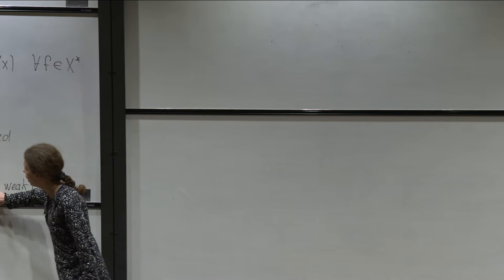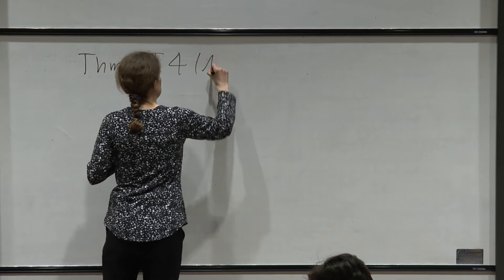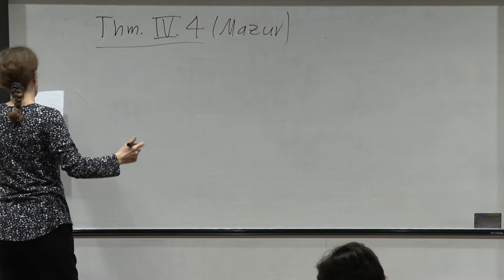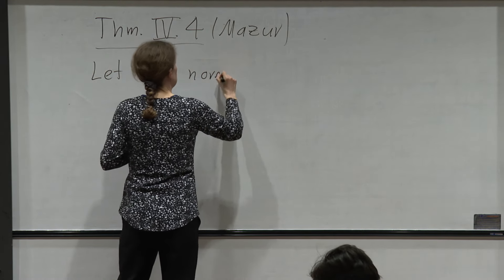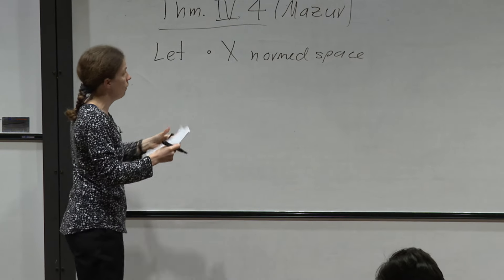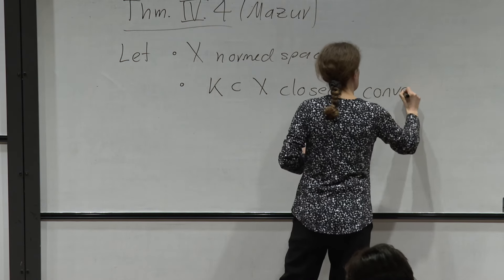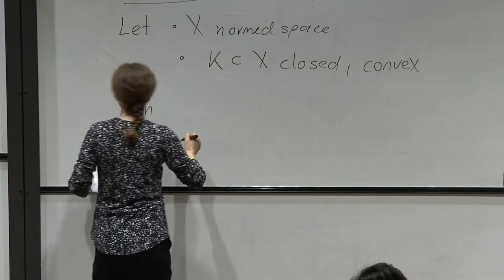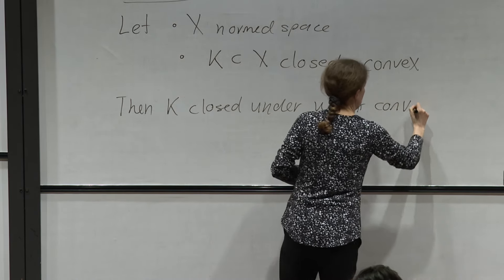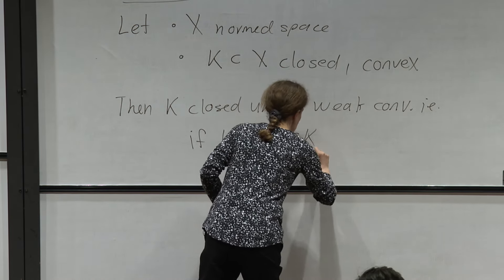Let's get started with the generalization, which is Mazur's theorem. Theorem 4.4: if we have a set that is convex and closed (in the standard norm sense) in a normed space X, then it is closed under weak convergence. That is, if xn is a sequence in K and xn converges weakly to x, then x is also in K.